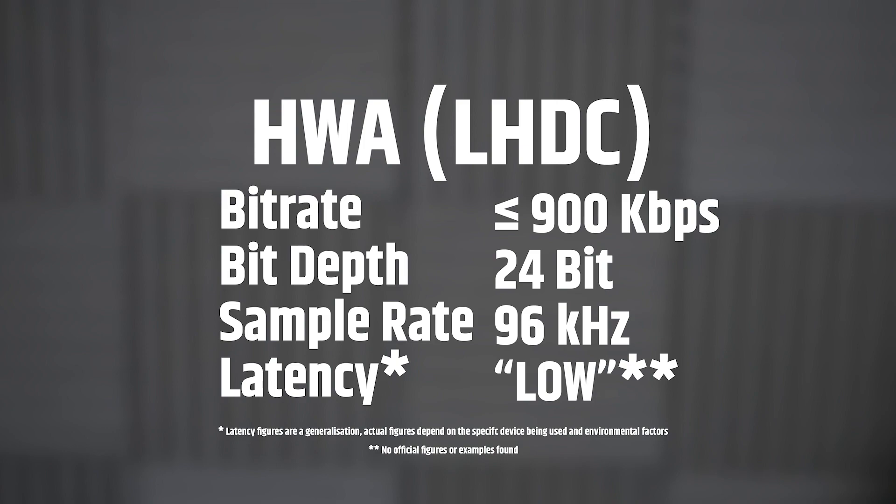Next up, we're going to look at HWA, or LHDC — Low Latency High Definition Audio Codec — a newer codec developed by the Hi-Res Wireless Audio Union and Savitech. Similar to LDAC, HWA provides a Hi-Res audio solution with a variable bitrate of 400, 560, and 900 kbps, a bit depth of up to 24-bit, and a sample rate of up to 96 kHz. HWA also boasts decreased latency versus the competition. Like LDAC, it has several profiles depending on connection strength, but unlike LDAC, it currently has no widespread adoption. At the time of recording, only Huawei phones support this standard, and the only receiving devices are the FiiO BTR3 and BTR5. There are currently no headphones supporting this standard.